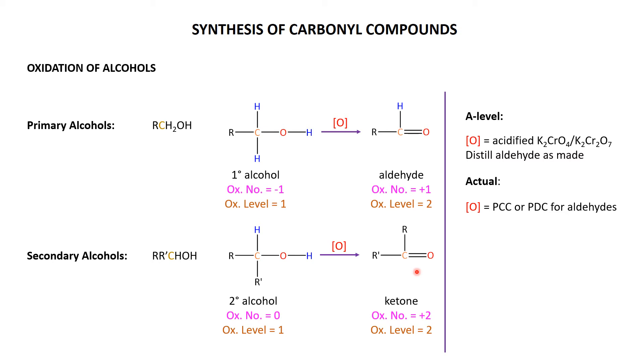We do use the dichromate or the chromate for the secondary alcohol oxidation to ketones. So, super way to make carbonyl compounds: you take an alcohol and you oxidize - primary alcohol in mild conditions to the aldehyde, or secondary alcohol you can use stronger conditions to get it to the ketone.